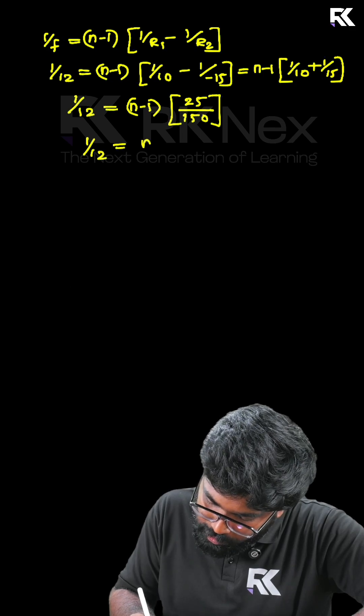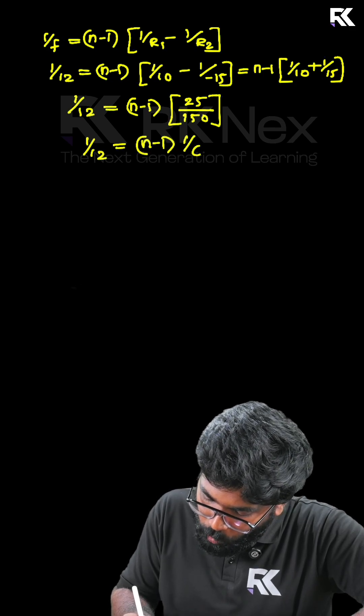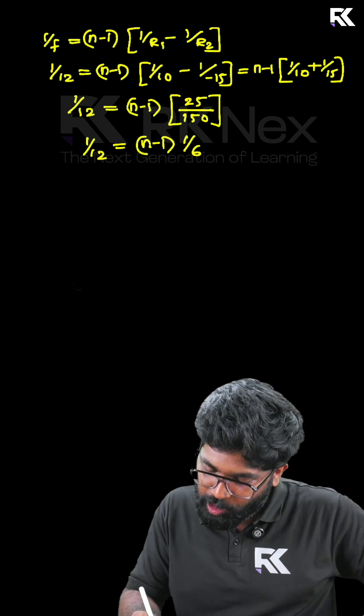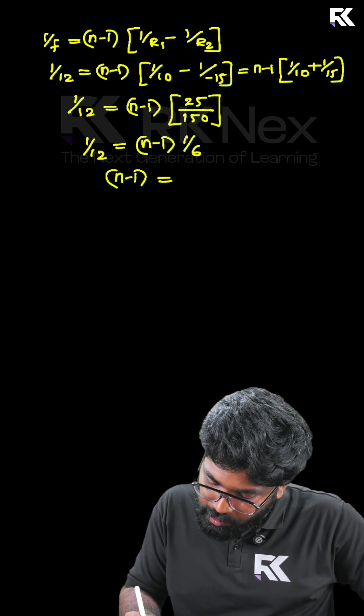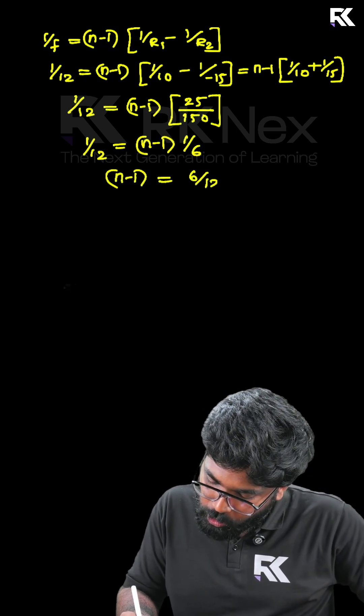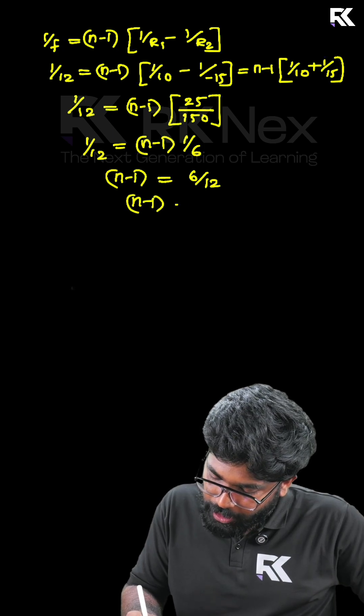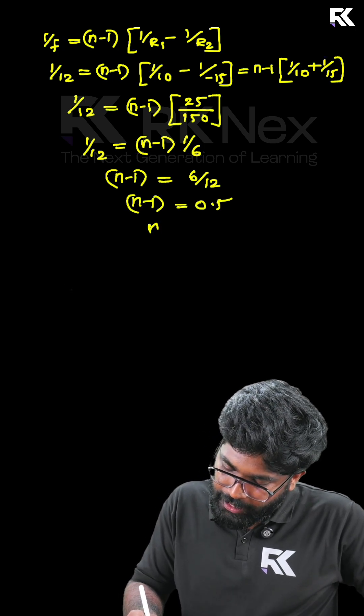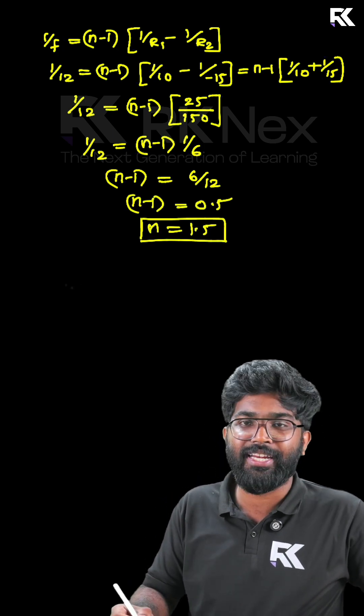So 1 divided by 12 is equal to n minus 1 into 1 by 6. That is equal to n minus 1 is equal to 0.5 and that is n is equal to 1.5, the refractive index.